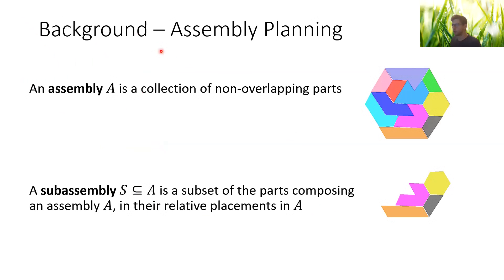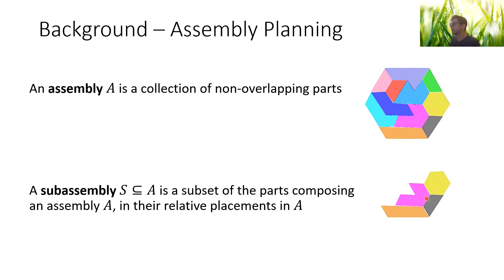So how do we get to this question? The background is from assembly planning. An assembly A is a collection of non-overlapping parts. They may be general bodies in 3D, but throughout the whole talk we're in the plane. Here you have an assembly of polygons, for example. A sub-assembly S of A is a subset of the parts composing the assembly in their relative placements to each other in the original assembly.